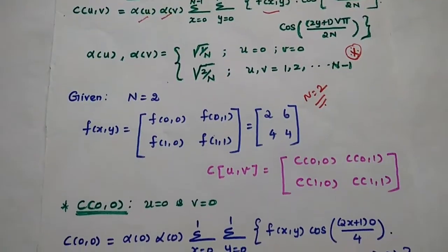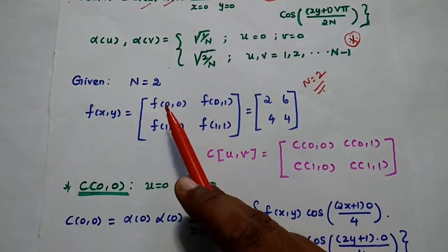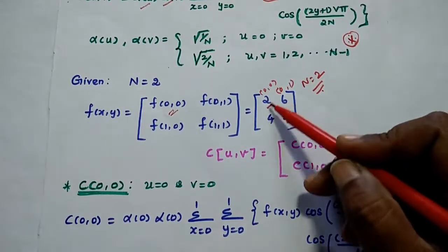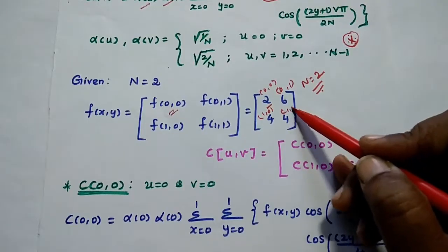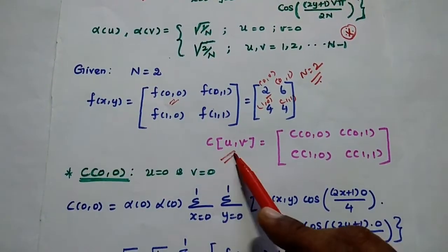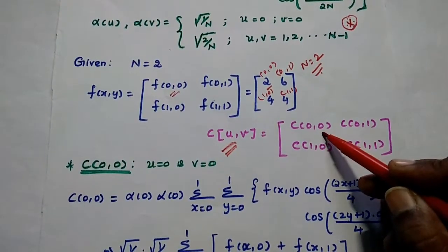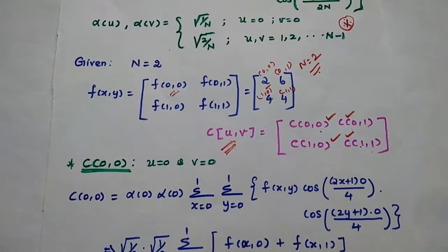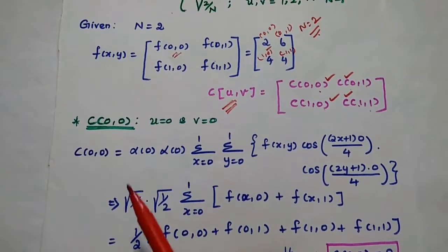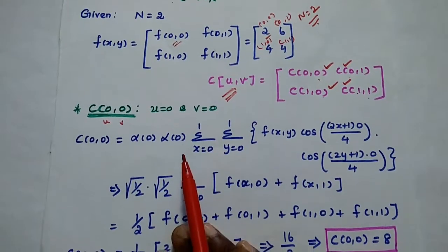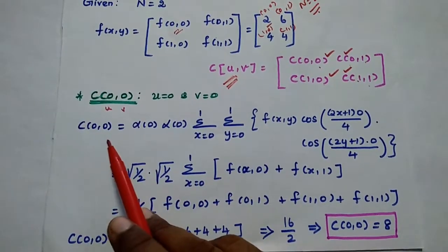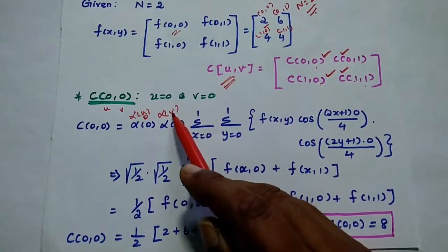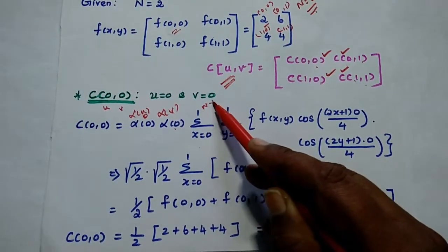In the given data, N=2 and the image values are: f(0,0)=2, f(0,1)=6, f(1,0)=4, f(1,1)=4. We are going to find the DCT values C(0,0), C(0,1), C(1,0), and C(1,1). First, we find C(0,0), where u=0 and v=0. Substituting into the formula: C(0,0) = α(0)·α(0) · Σ(x=0 to 1) Σ(y=0 to 1) f(x,y) · cos[(2x+1)·0·π/4] · cos[(2y+1)·0·π/4].